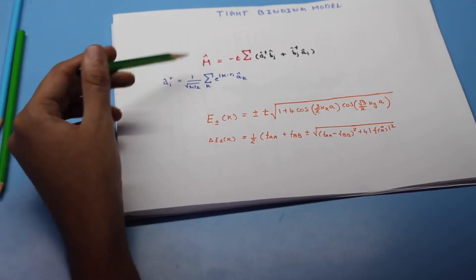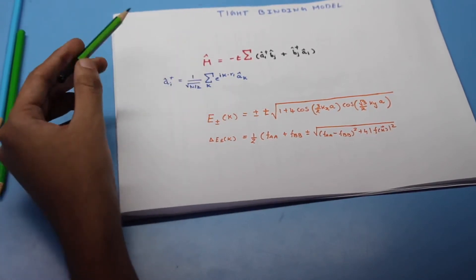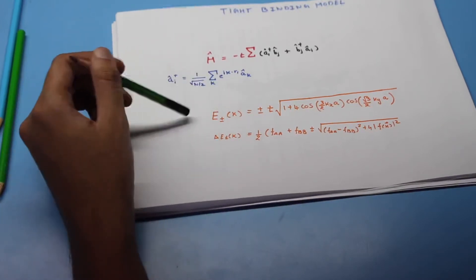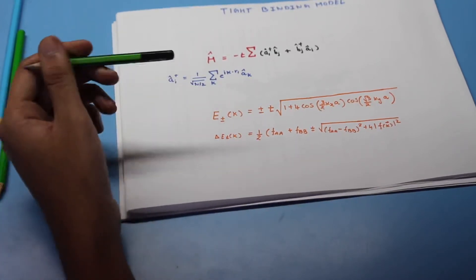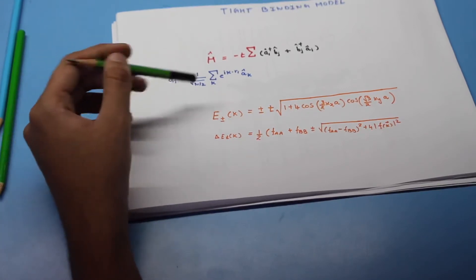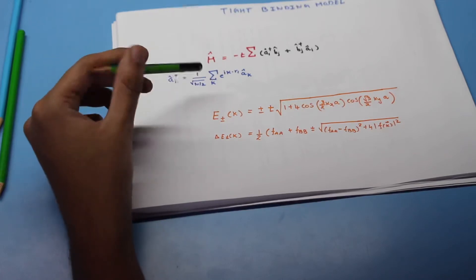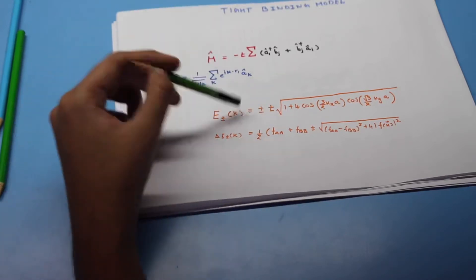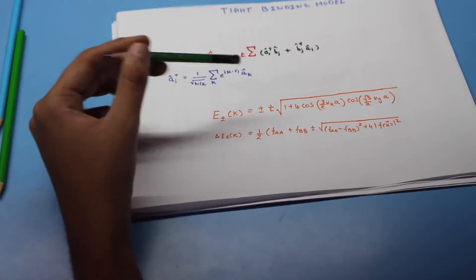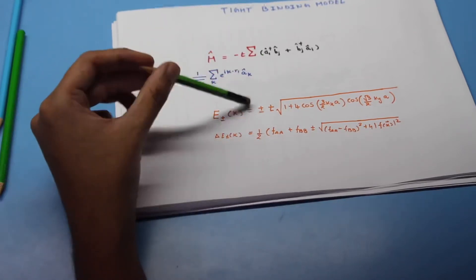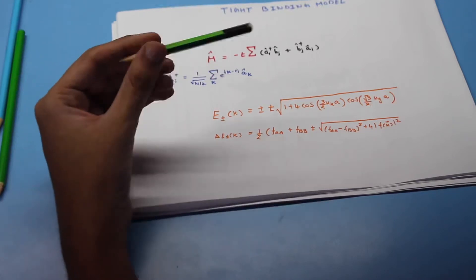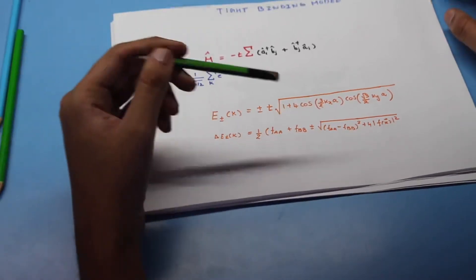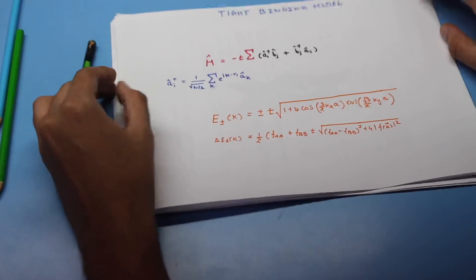On operating this Hamiltonian for our graphene we can obtain the energy value using the tight binding model which gives us this equation. This equation would tell us what actually our band structure would look like. There are three key parameters. The T which is also found in the Hamiltonian is a hopping parameter. It tells us about the likeliness of the electron hopping from site A to site B and so on. This could also be represented in this form in which case we have two parameters FAA and FBB, where FAA deals with the interactions at sites A with site A and FBB deals with the interactions with sites B.